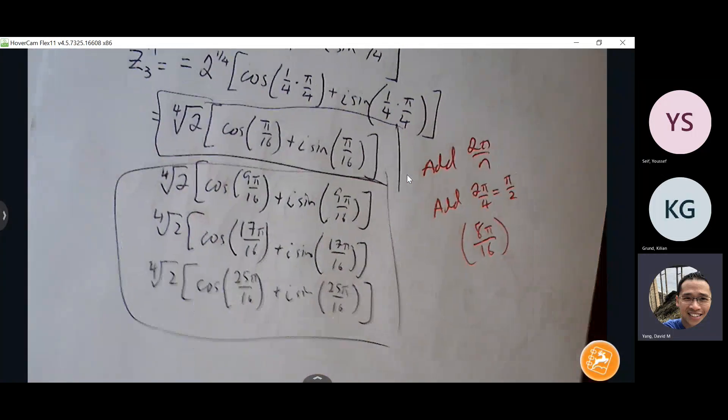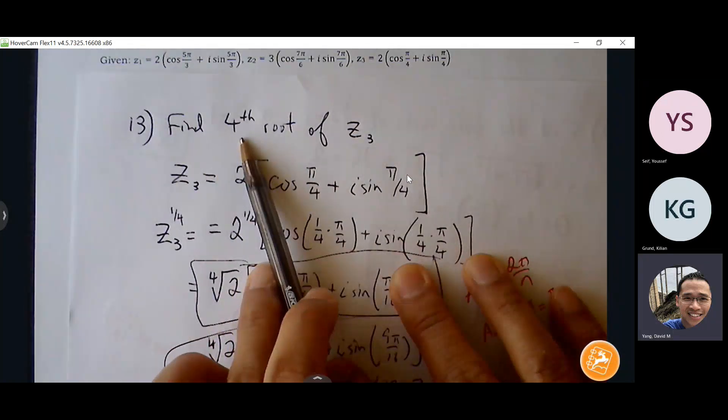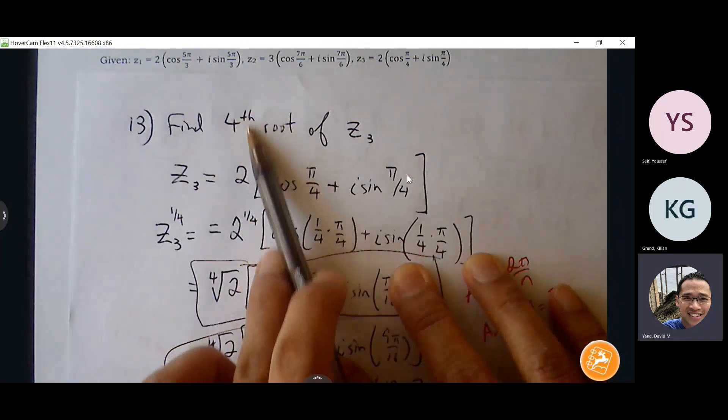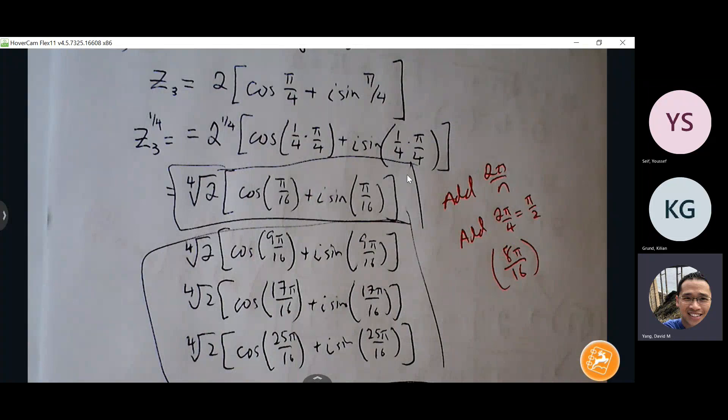How would you tell if it's supposed to have four solutions instead of three? Well, it says find the fourth root. Oh, alright. Right, so whatever root you have, whatever number you see there, that's the number of solutions you're looking for. So fifth root will be five solutions. Sixth root will be six solutions.